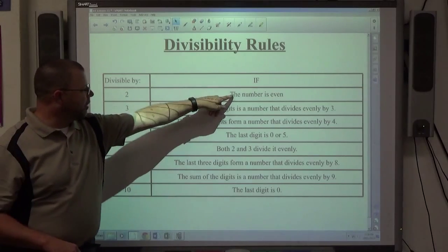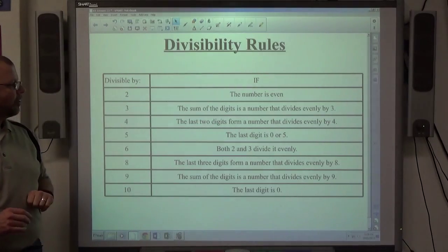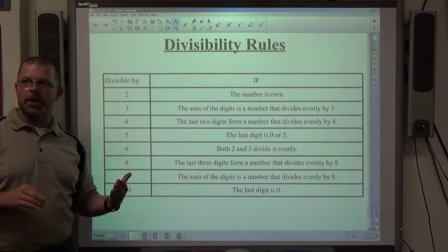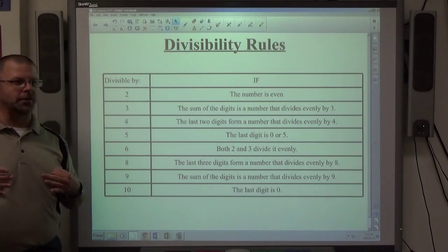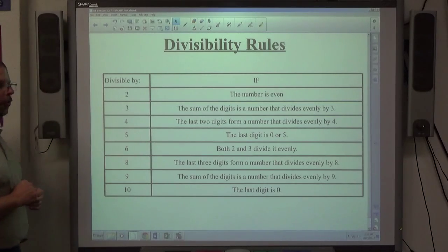If numbers are even they divide by 2. If the sum of the digits adds up to a number that divides by 3, then 3 will divide the whole number.